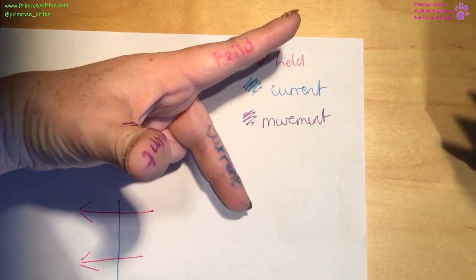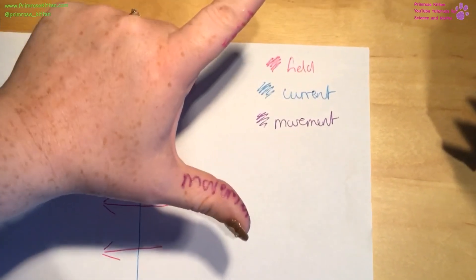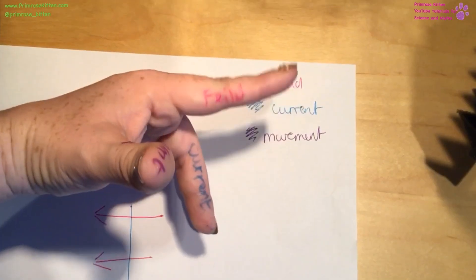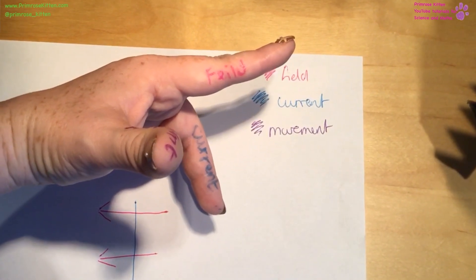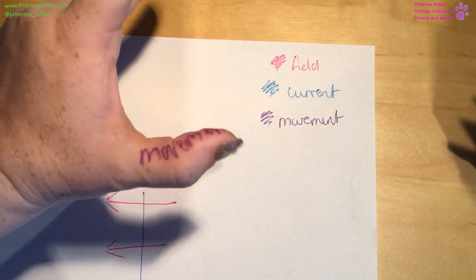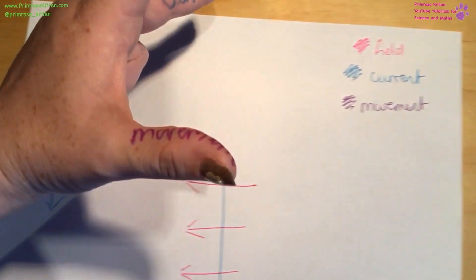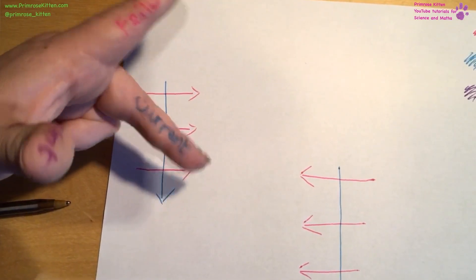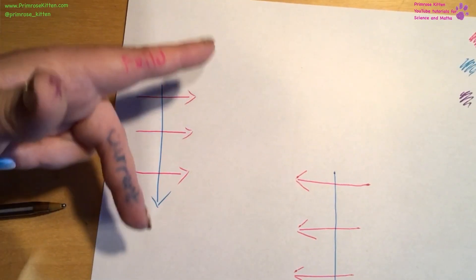So, for Fleming's left hand rule, we need to make our left hand in this shape here. Finger pointing out, thumb up, finger out. Your first finger is your magnetic field, this finger here is the current, and then your thumb is the movement of the force. And what you need to do, when you have an exam question, is you can turn your hand until it fits in the right direction.